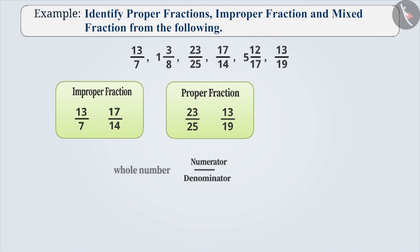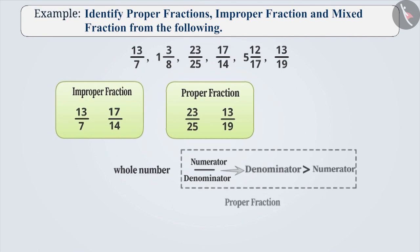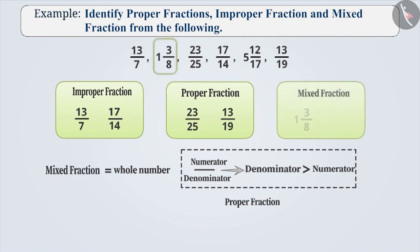Similarly, a fraction having a whole number and a proper fraction is called a mixed fraction. Therefore, among the given numbers, 1 and 3 by 8, and 5 and 12 by 17 are mixed fractions.